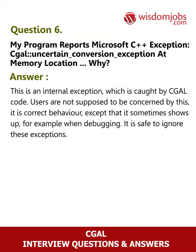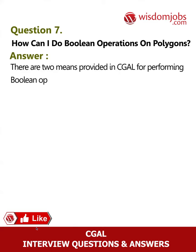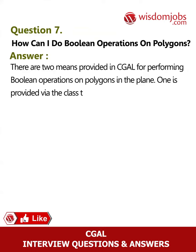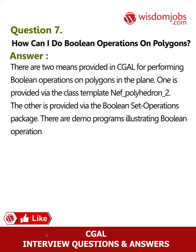Question 7: How can I do boolean operations on polygons? Answer: There are two means provided in CGAL for performing boolean operations on polygons in the plane. One is provided via the class template Nef_polyhedron_2; the other is via the Boolean Set Operations package. Demo programs illustrate boolean operations using both of these.